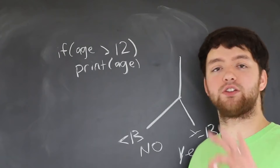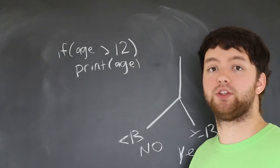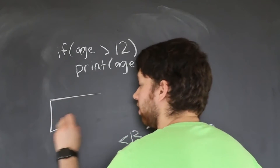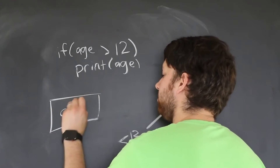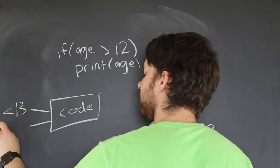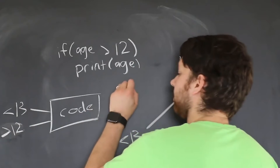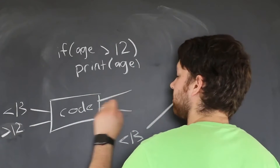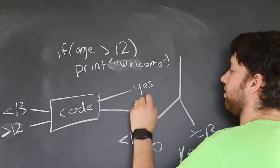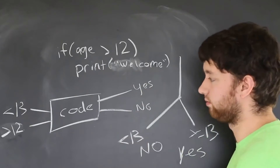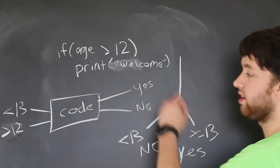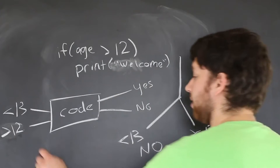So you can see we essentially branched our program based on the input. In our diagram, we can have our code in the middle, two inputs — less than 13 and greater than 12 — and then two outputs. For example, instead of printing the age, we could say welcome, and then two outputs: yes or no. So you can see it starts to get more complex, which is awesome. Generalizing makes our programs dynamic.